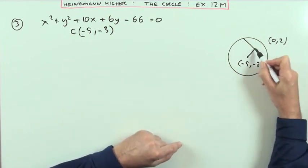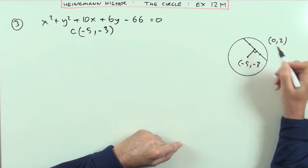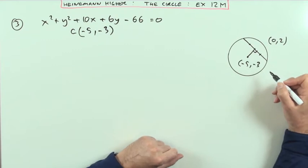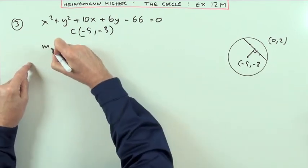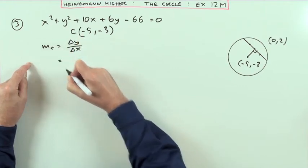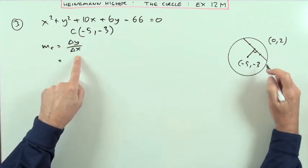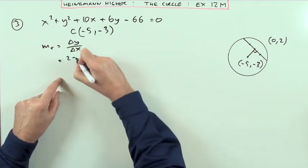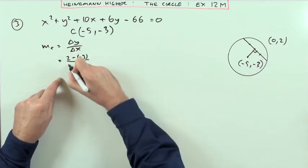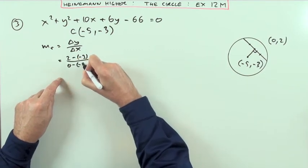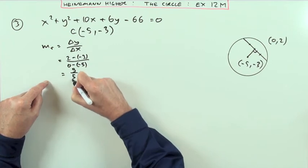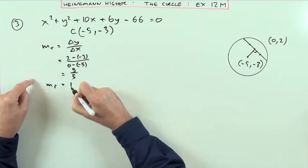If (0, 2) is the midpoint of the chord, the radius hitting the midpoint must hit it at right angles. So you can get the gradient of the chord from the gradient of that radius. The difference in the y-coordinates: 2 take away negative 3. The difference in the x-coordinates: 0 take away negative 5, which is positive 5 over positive 5.